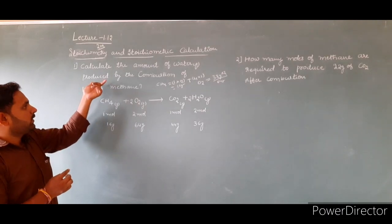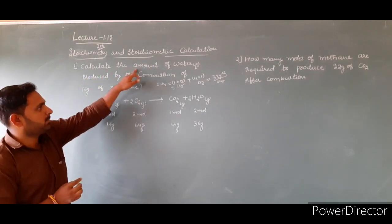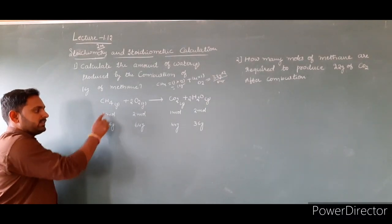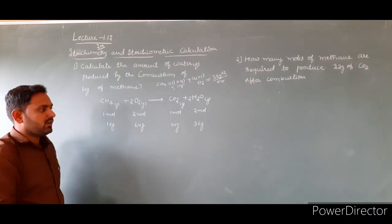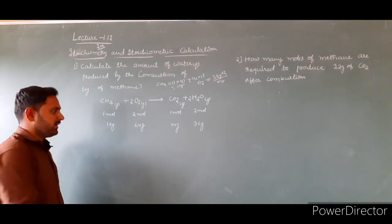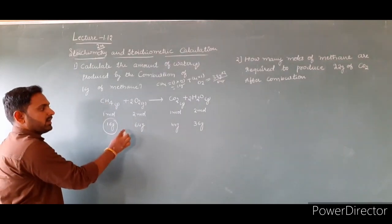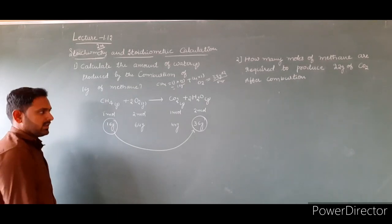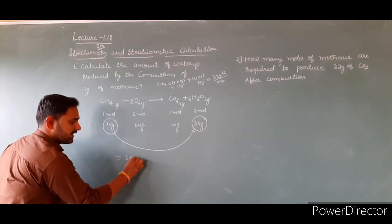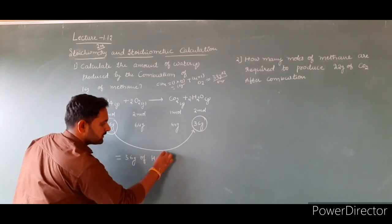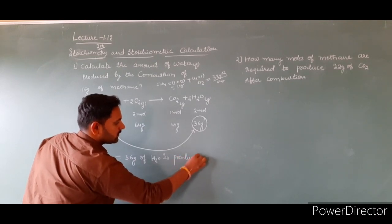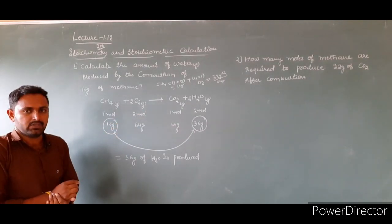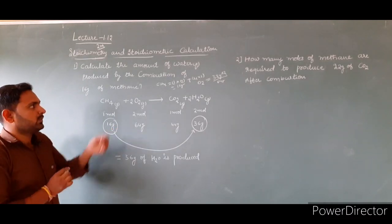The question asks for the amount of water produced by combustion of 16 grams of methane. According to the balanced equation, 16 grams of methane when burned in excess oxygen produces 36 grams of water. The answer is 36 grams.